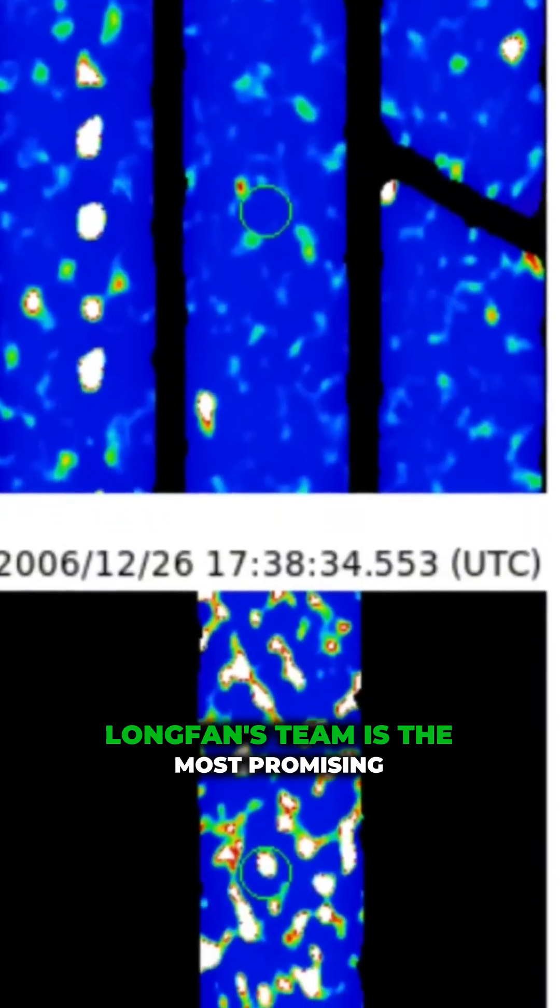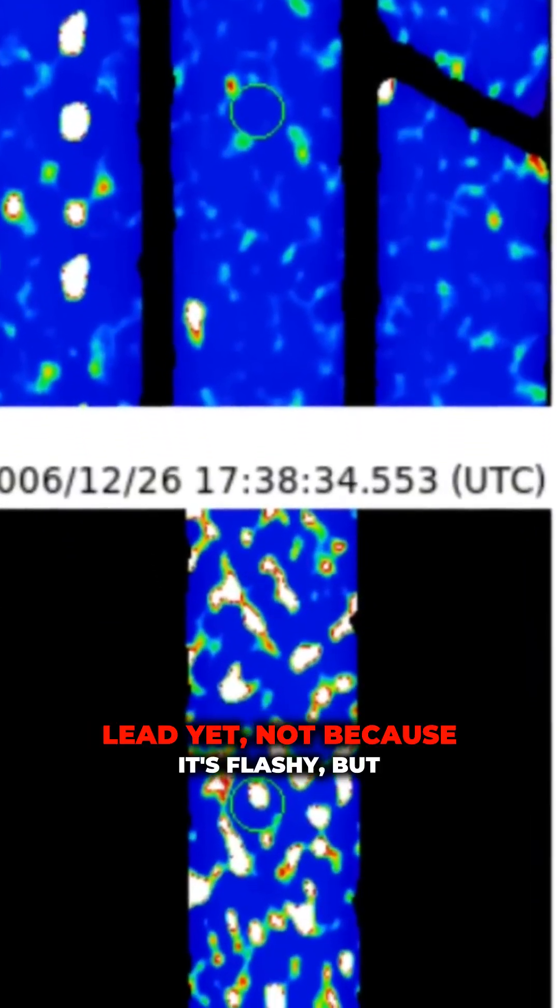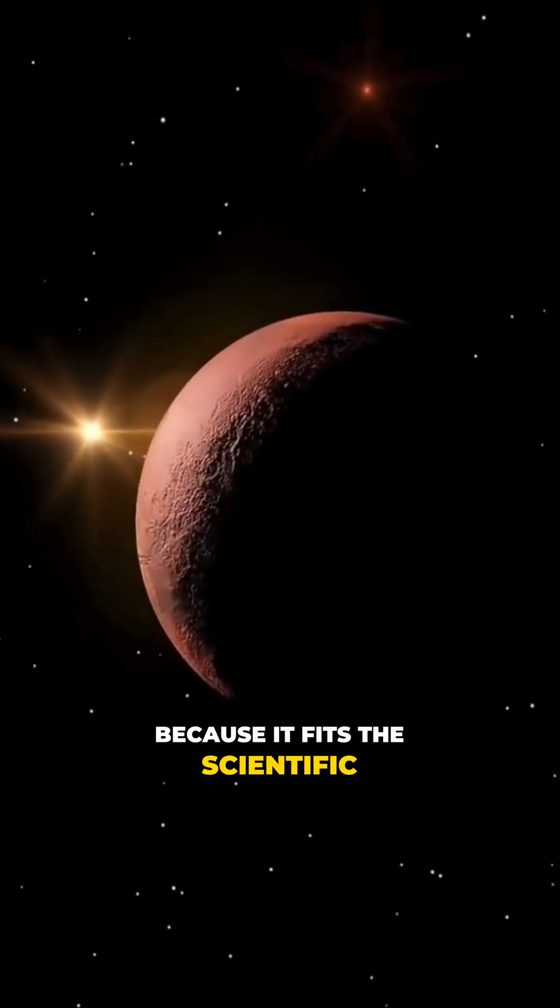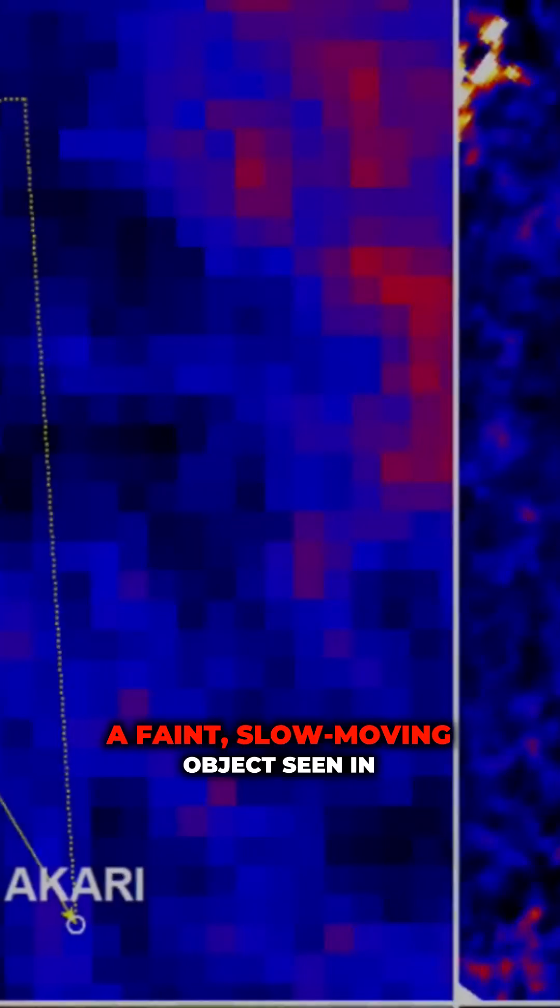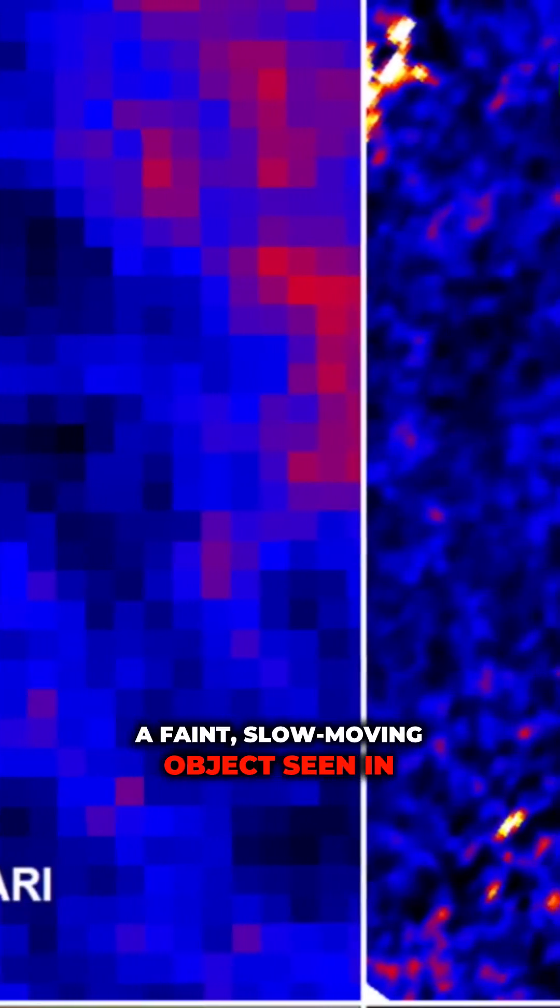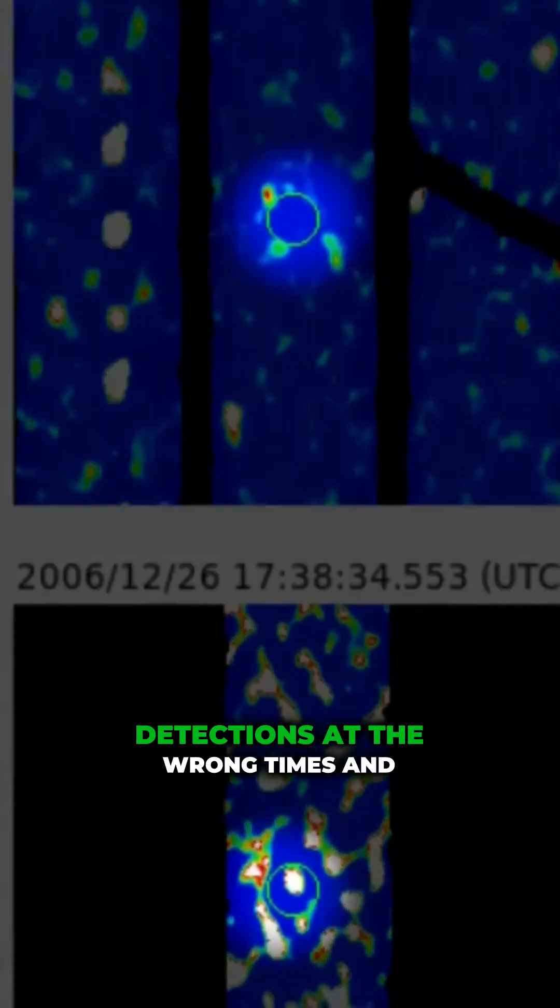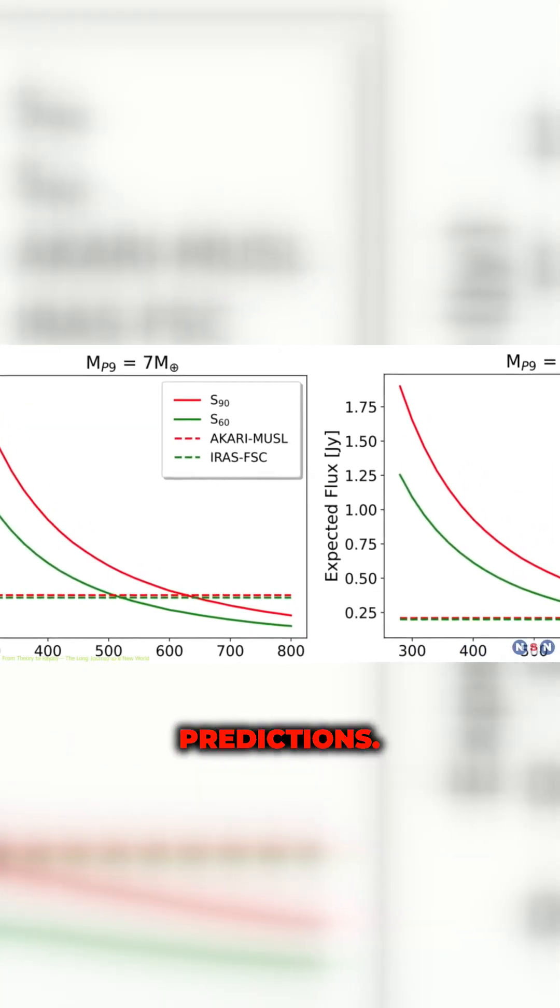The candidate found by Terry Longfan's team is the most promising lead yet, not because it's flashy, but because it fits the scientific expectations. A faint, slow-moving object seen in two surveys decades apart, with no detections at the wrong times, and a brightness that lines up with predictions.